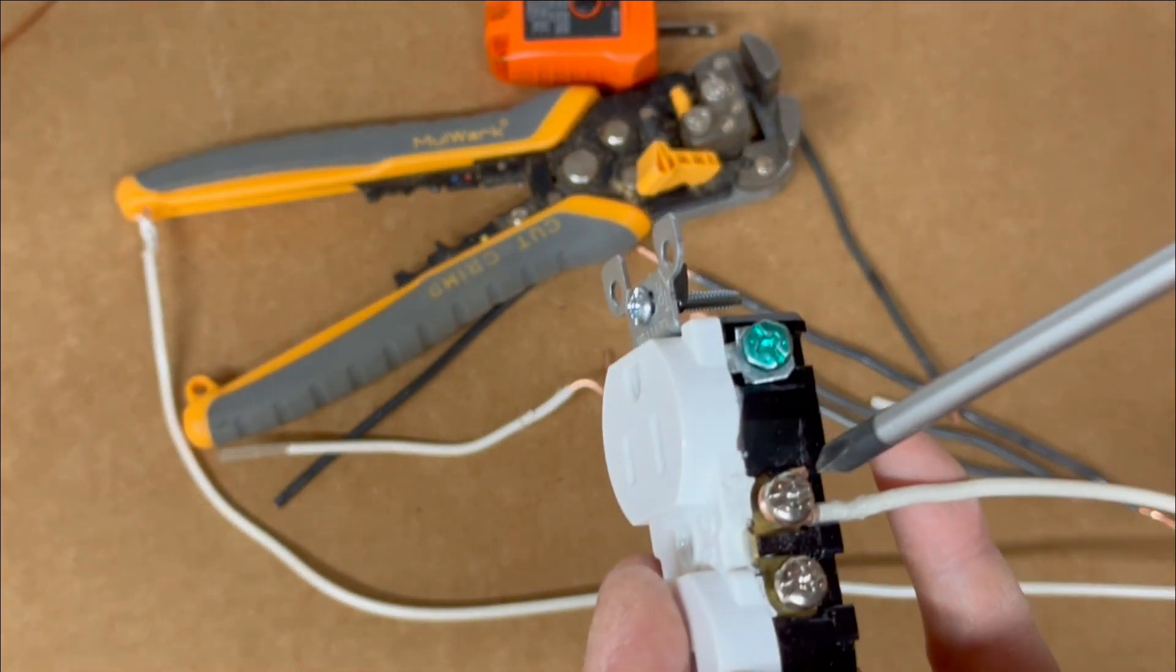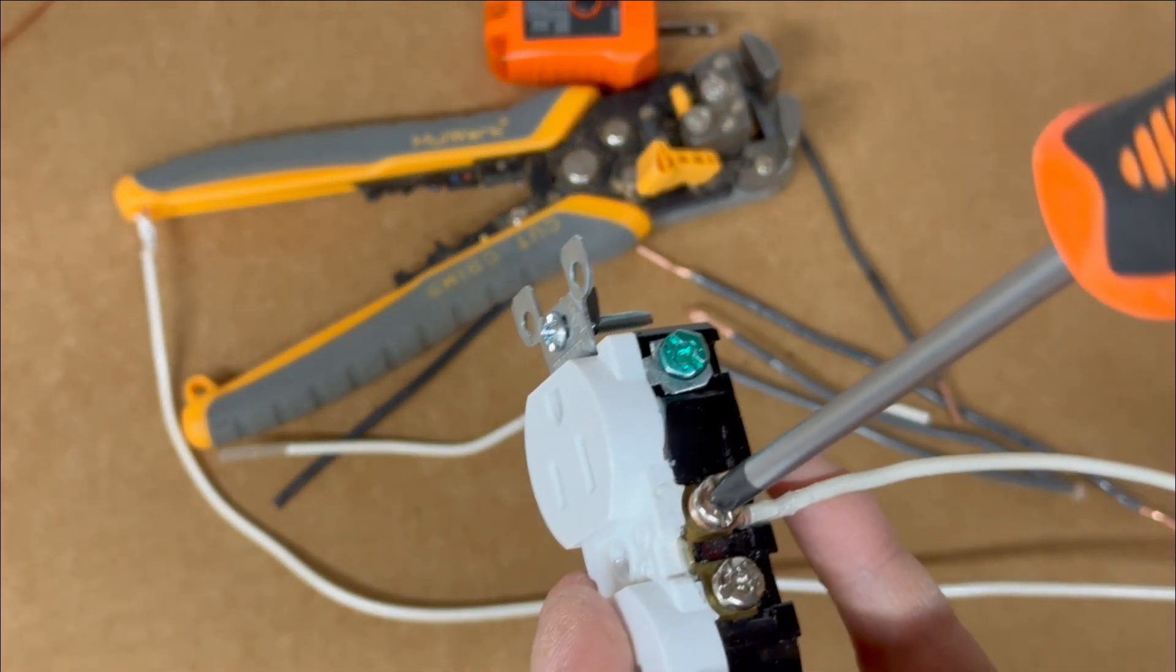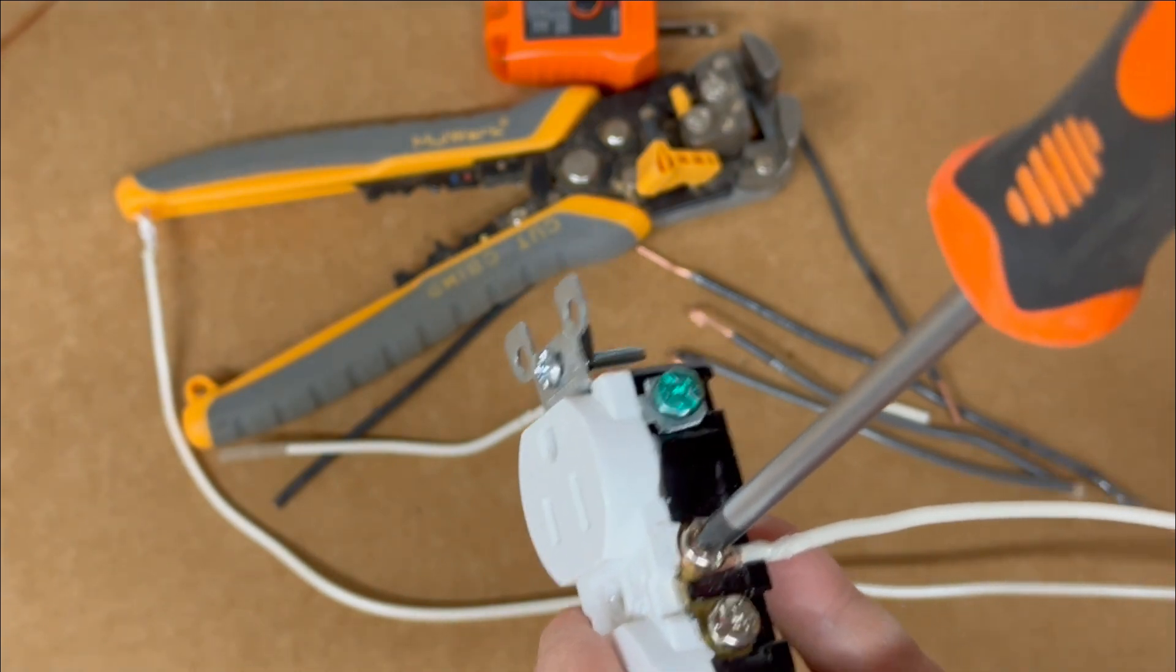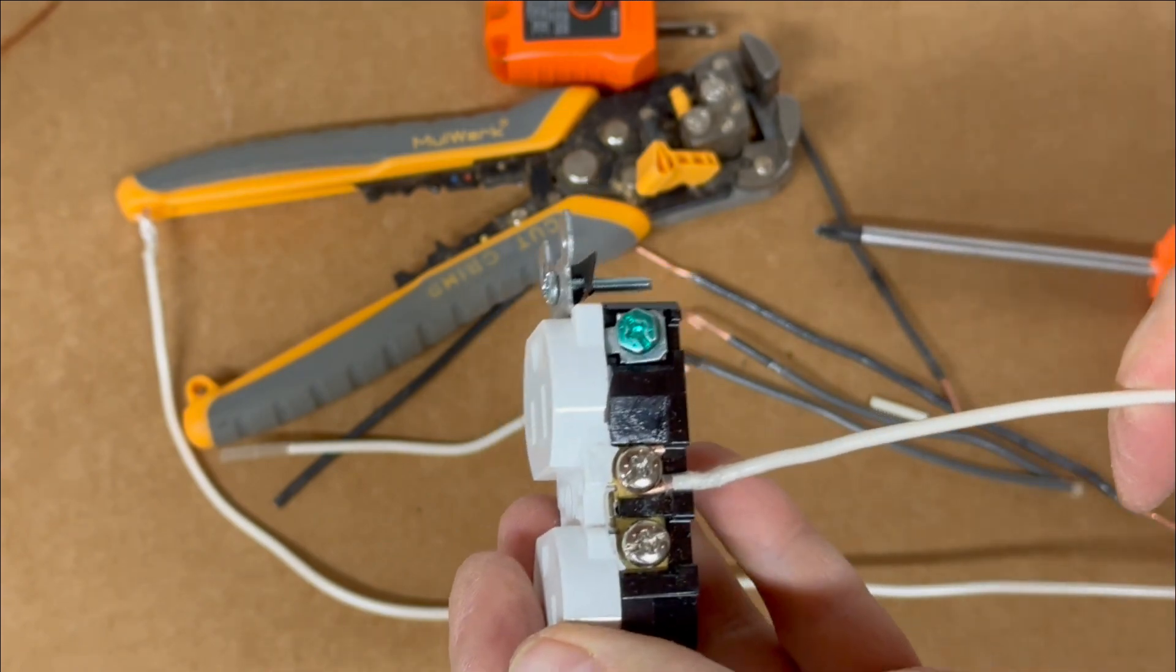If we take that same strand of wire and wrap it around in the correct direction, clockwise, you will see that all the strands are held much tighter.